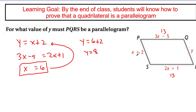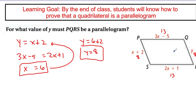Now I plug x equals 6 into the first equation: y equals 6 plus 2, so y equals 8. Double-checking: plugging 6 in gives 8 on one side, and y is also 8 on the other. So if this is a parallelogram, x has to be 6 and y has to be 8, giving side lengths of 13 on top and bottom and 8 on left and right. For any other values, opposite sides won't be congruent and it won't be a parallelogram.